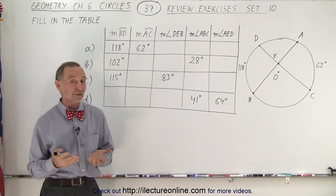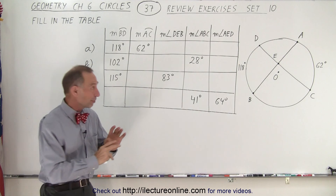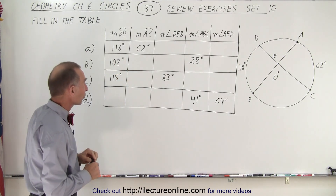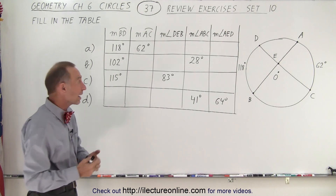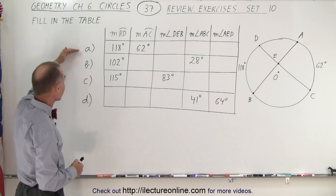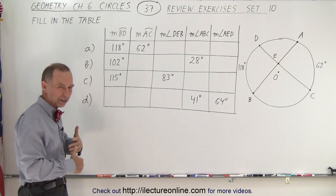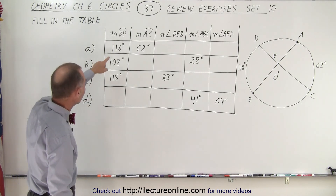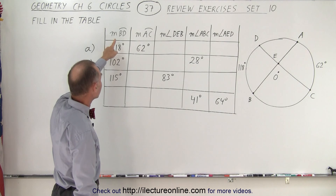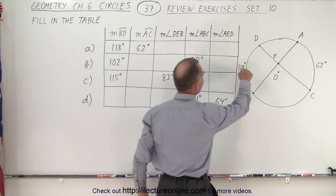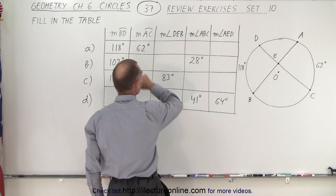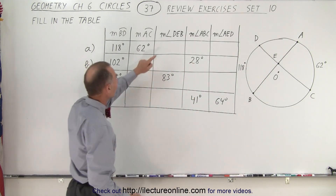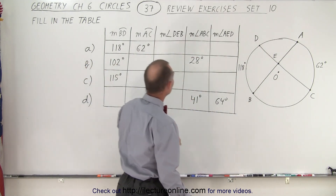Our next problem is an interesting one. We're supposed to fill out the table. Notice there are five different measures they want us to find, although they give us two of the five in each particular case. There are parts A, B, C, and D, so it's a reset each time. We start with two numbers given: the arc from B to D is 118 degrees and the arc from A to C is 62 degrees. Now we're trying to find the measures of three angles.